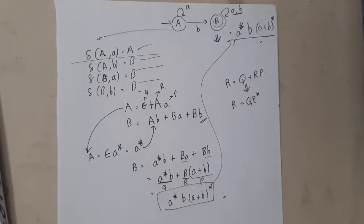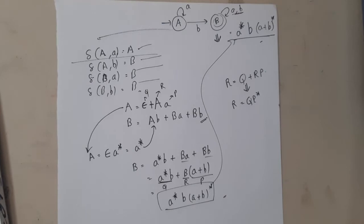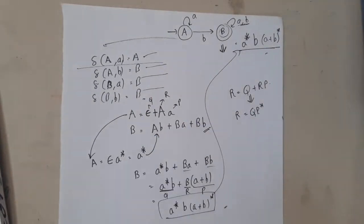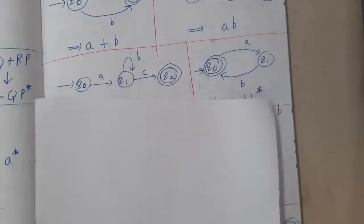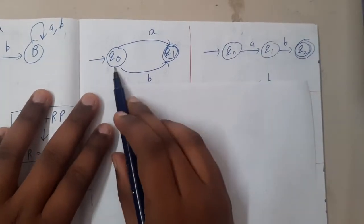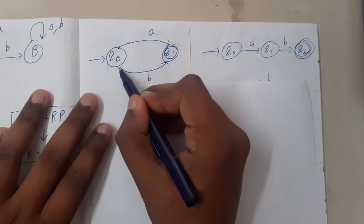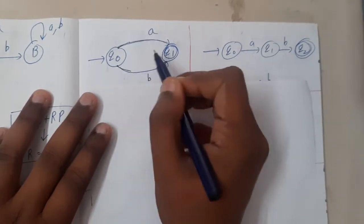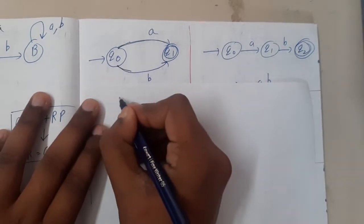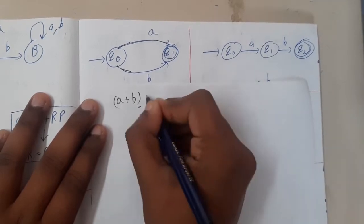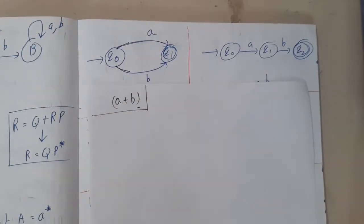So now everyone understands why I said the observation method is easier. I will be solving around 20 questions in this lecture and it will take around five to ten minutes more using the observation method. I am not going to solve each one using the formal Arden's theorem approach. Let's start with the examples.